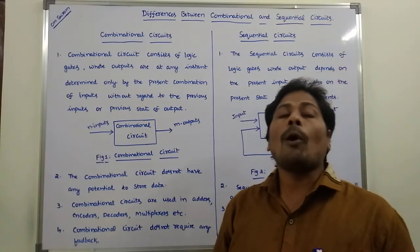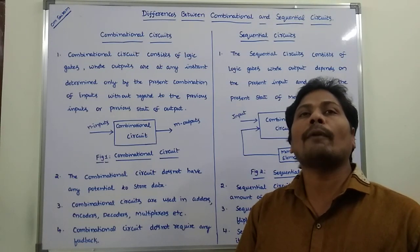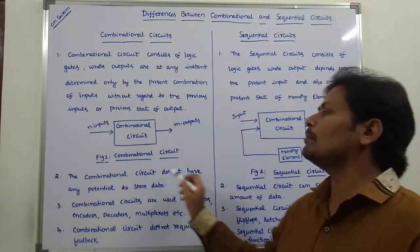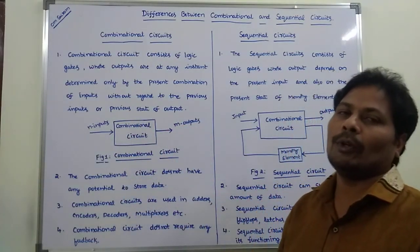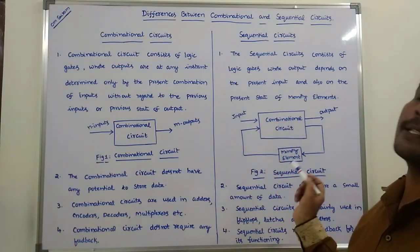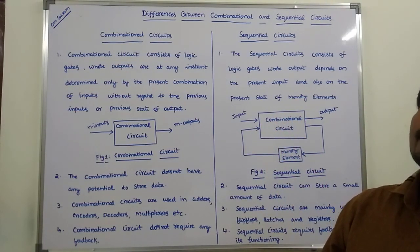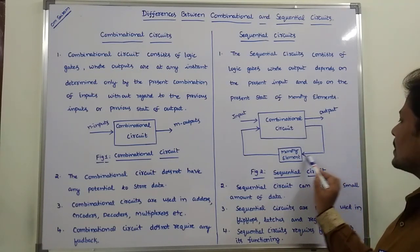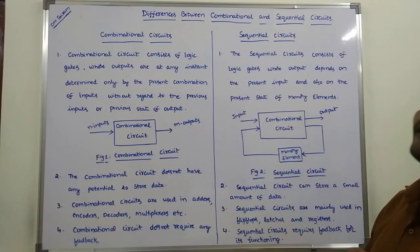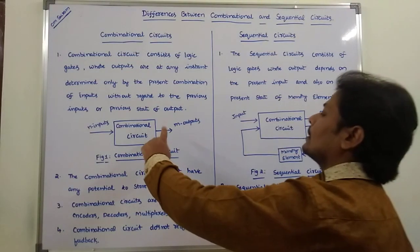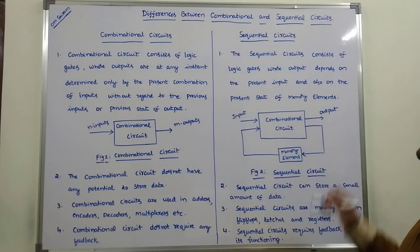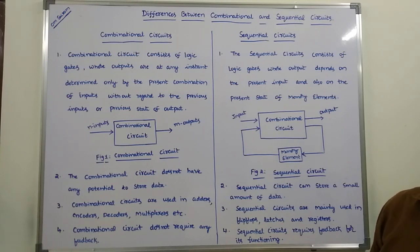The combinational circuit does not require any feedback — as seen in this diagram, there is no feedback. But in the case of sequential circuit, feedback is required for its functioning. The combinational circuit does not require any feedback, but the sequential circuit requires feedback for its functioning.